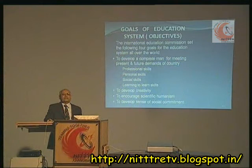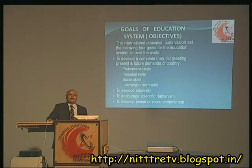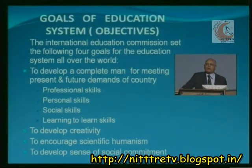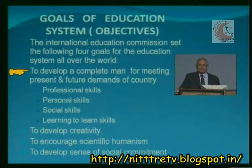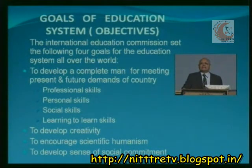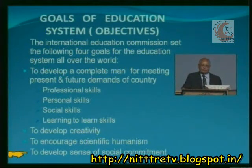Polytechnics are established with the objective of producing technicians for industry, and they are not only meant for developing vocational skills but for developing the whole person. The International Education Commission set four goals for educational systems worldwide: to develop a complete, holistic person for meeting present and future demands — professional skills, personal skills related to personality, social skills related to dealing with others, and learning-to-learn skills. Additionally, to develop creativity, increase scientific humanism with compassion, and develop a sense of social commitment.